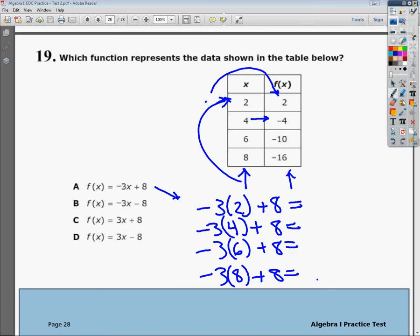So if you do negative 3 times 2 gives you negative 6 plus 8, it does give you 2. So I plugged in this and I got this. Check, check. If I plug in 4, negative 3 times 4 is negative 12, plus 8 gives you negative 4. So I plugged in this and I got this. Check, check.